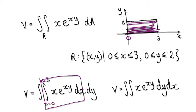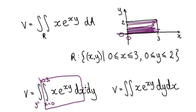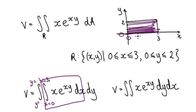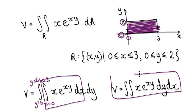For the outer integral, you're moving along the Y direction. The Y bounds have to match up, and you can see you're scanning from Y equals 0 to 2, so the outer integral goes from 0 to 2.